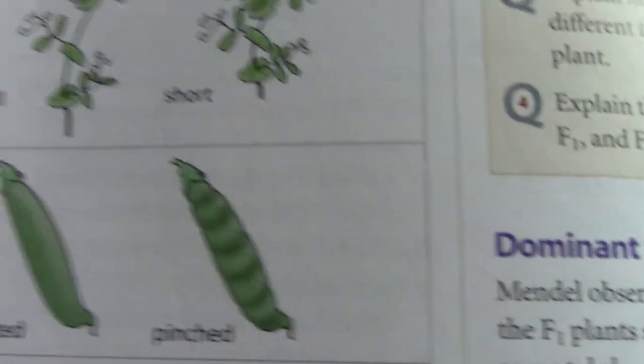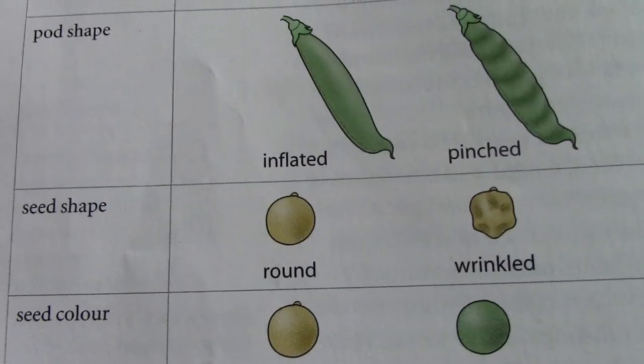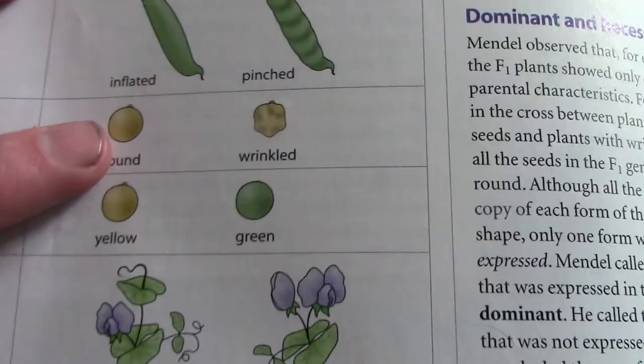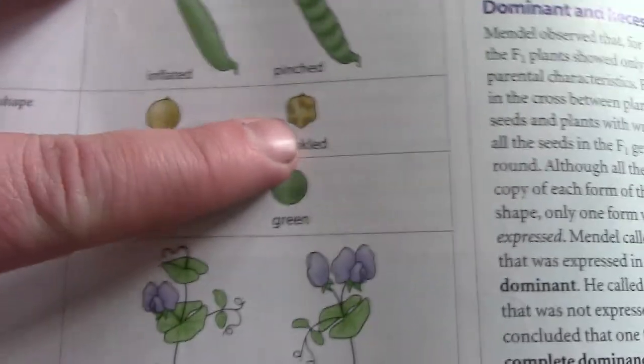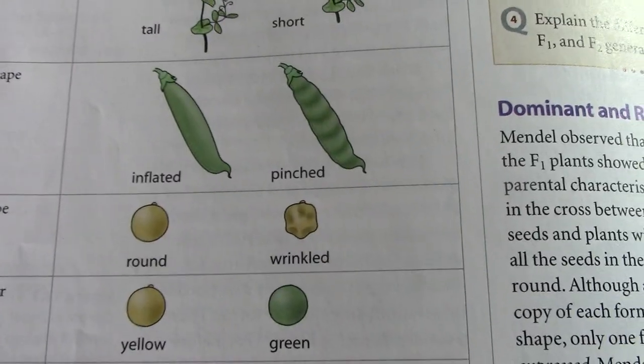This is what Mendel did. Mendel bred what we call true breeding stocks together. If we look at one trait — let's look at seed shape, round or wrinkled. The trait on the left is dominant and the trait on the right is recessive.